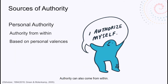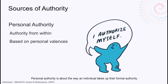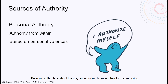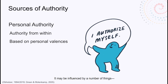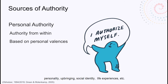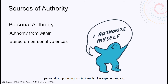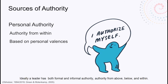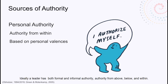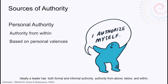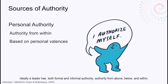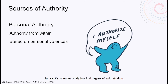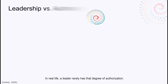Authority can also come from within. Personal authority is about the way an individual takes up their formal authority. It may be influenced by a number of things: personality, upbringing, social identity, life experiences, etc. Ideally, a leader has both formal and informal authority — authority from above, below, and within. In real life, a leader rarely has that degree of authorization.